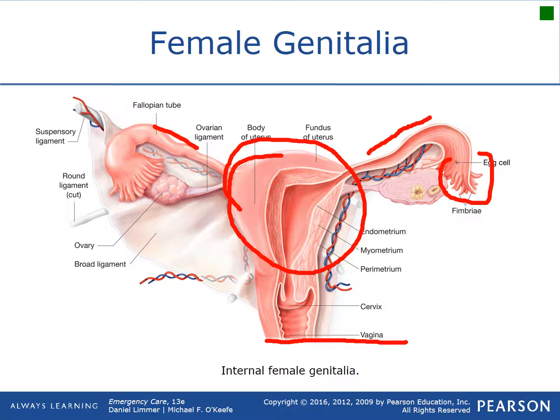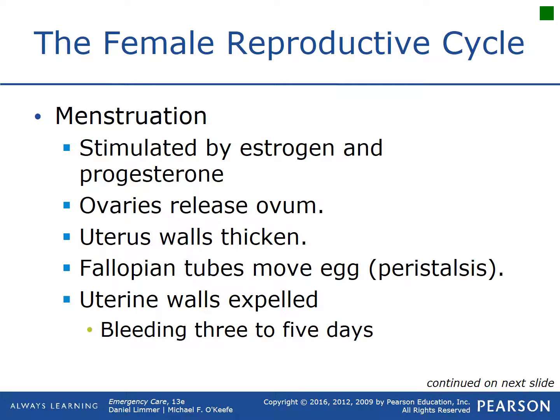The reproductive cycle of the female is all based on hormones. Menstruation is part of the hormonal process, occurring due to estrogen and progesterone. The ovaries release an egg, the uterus wall thickens, the fallopian tubes pass that egg through, and then the body expels it — the female body cycles through eggs, which is the reason for the menstruation cycle and bleeding.